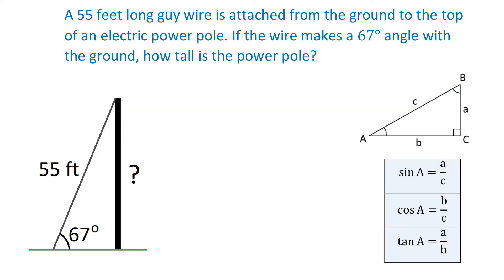Let's start this problem by having a drawing of the power pole and the guy wire. Here we have the ground, and we will assume that it is horizontal. Then the electric power pole is perpendicular to the ground. The guy wire is 55 feet long and forms a 67 degree angle with the ground. Then what we see here is a right triangle with an acute angle of 67 degrees and the hypotenuse of 55 feet.